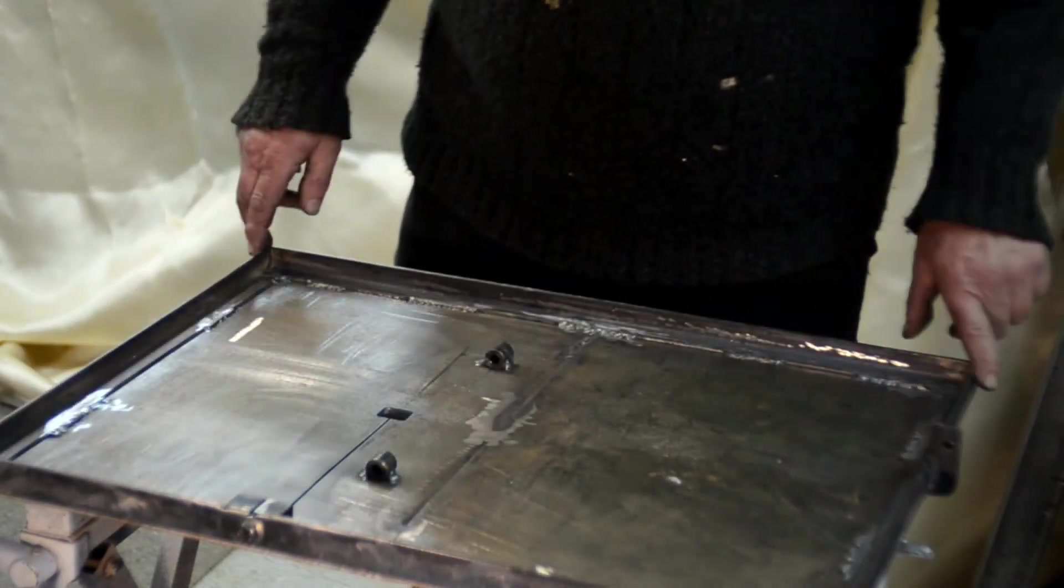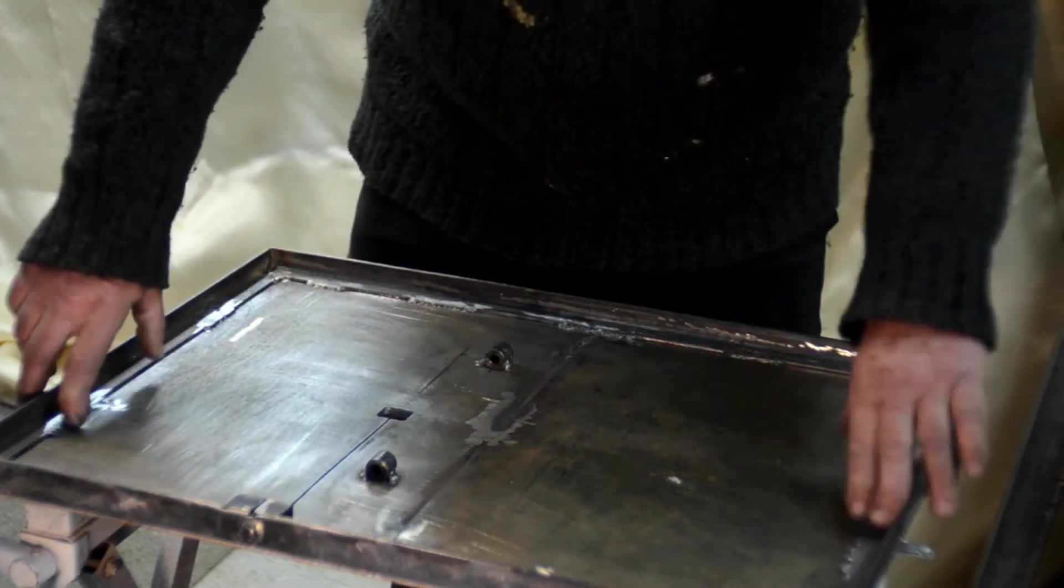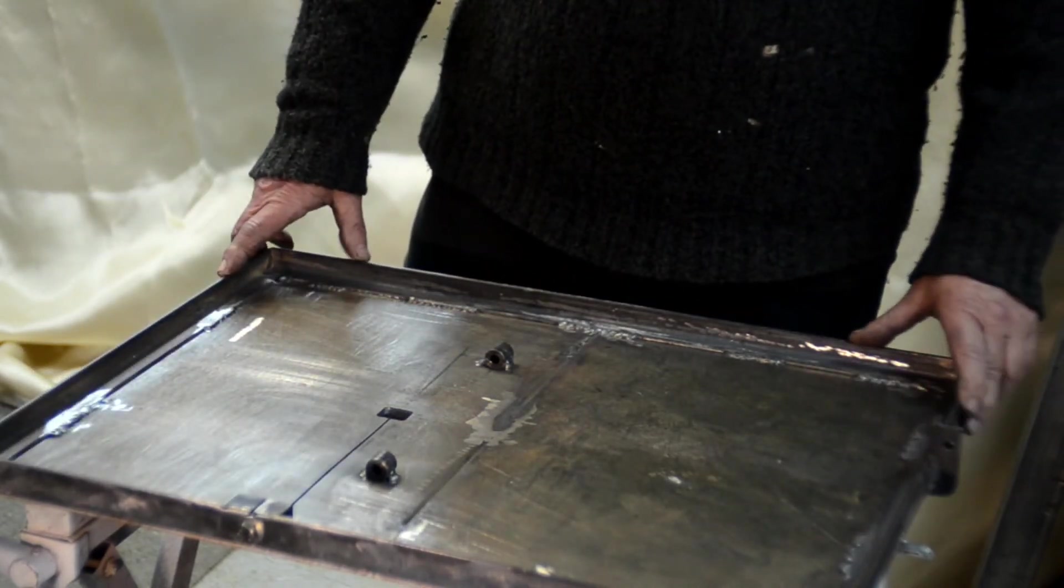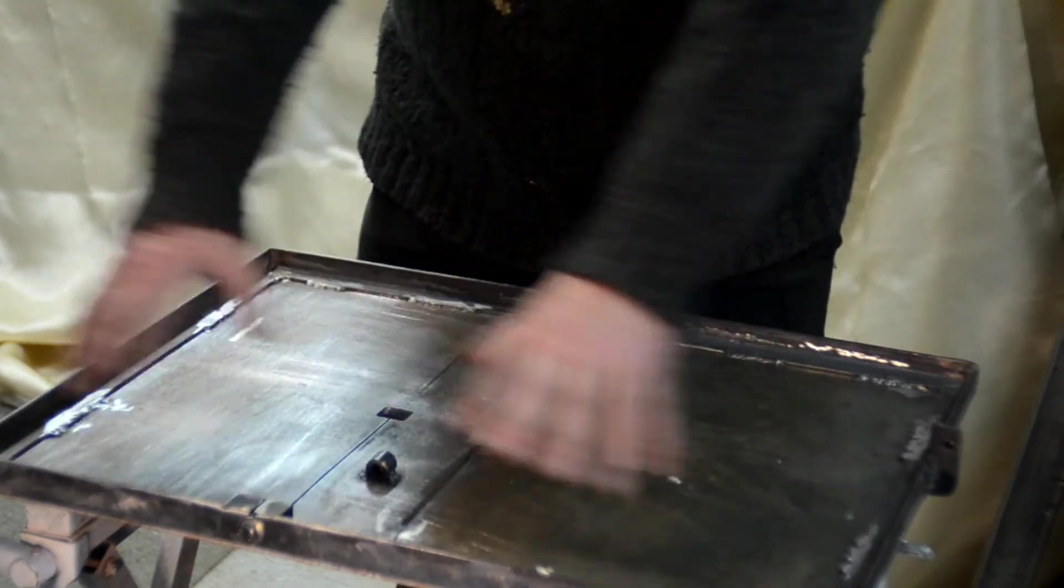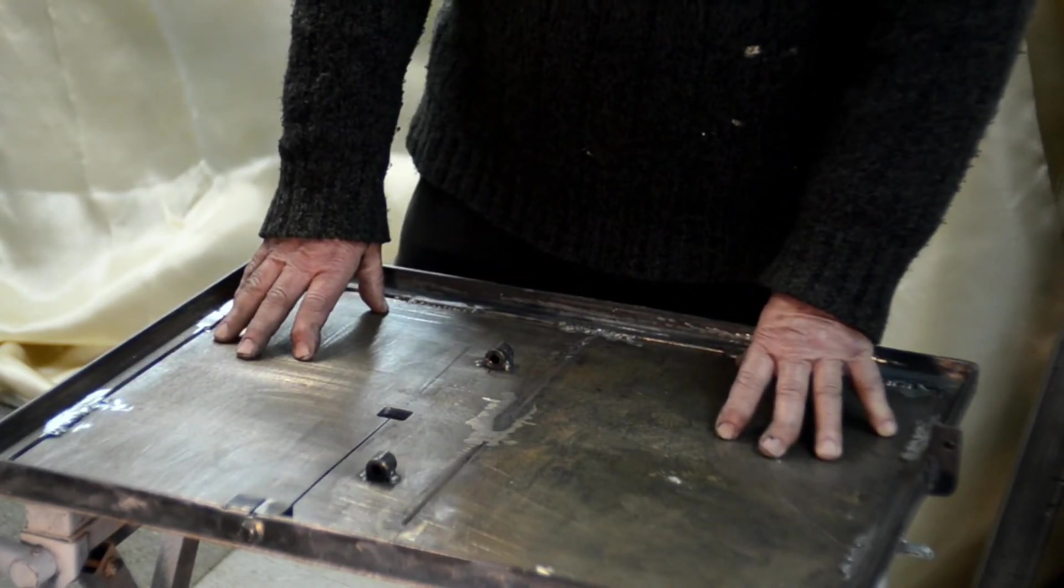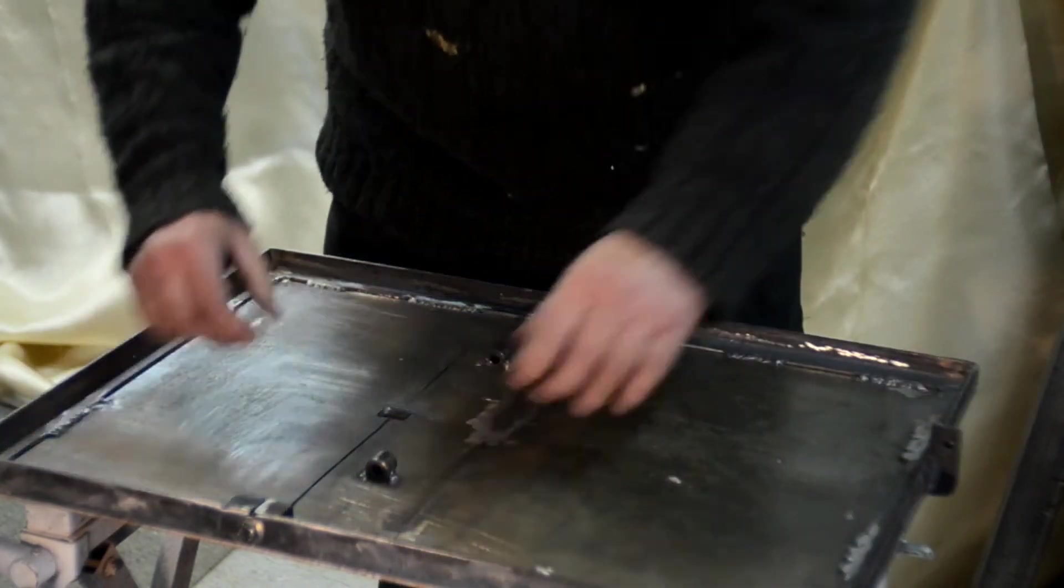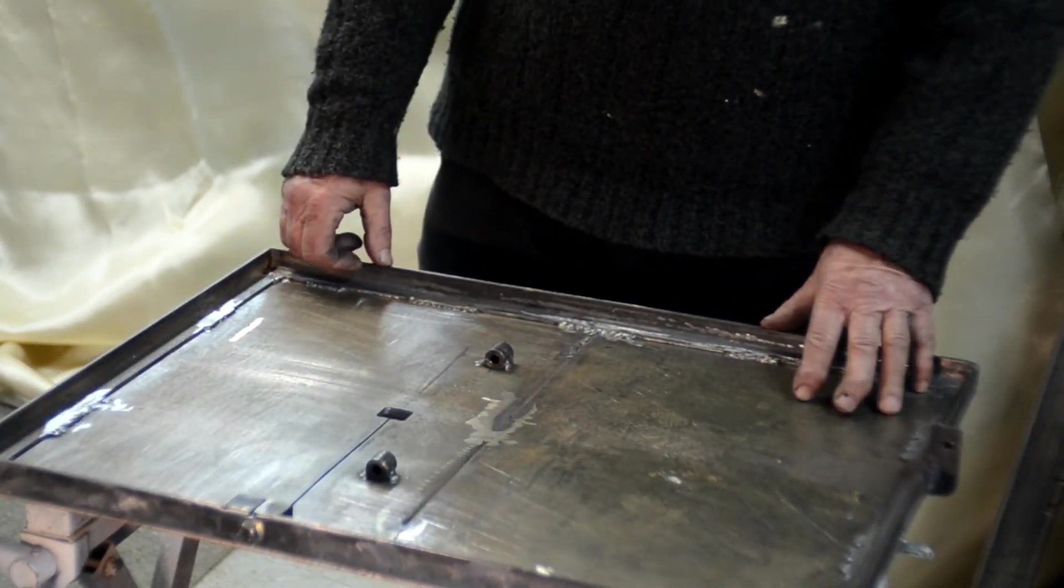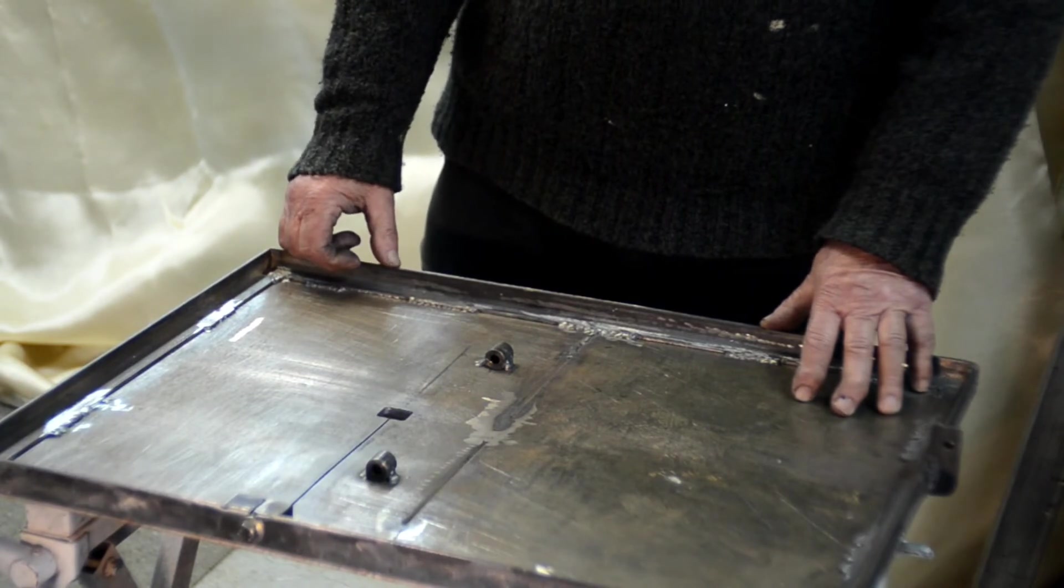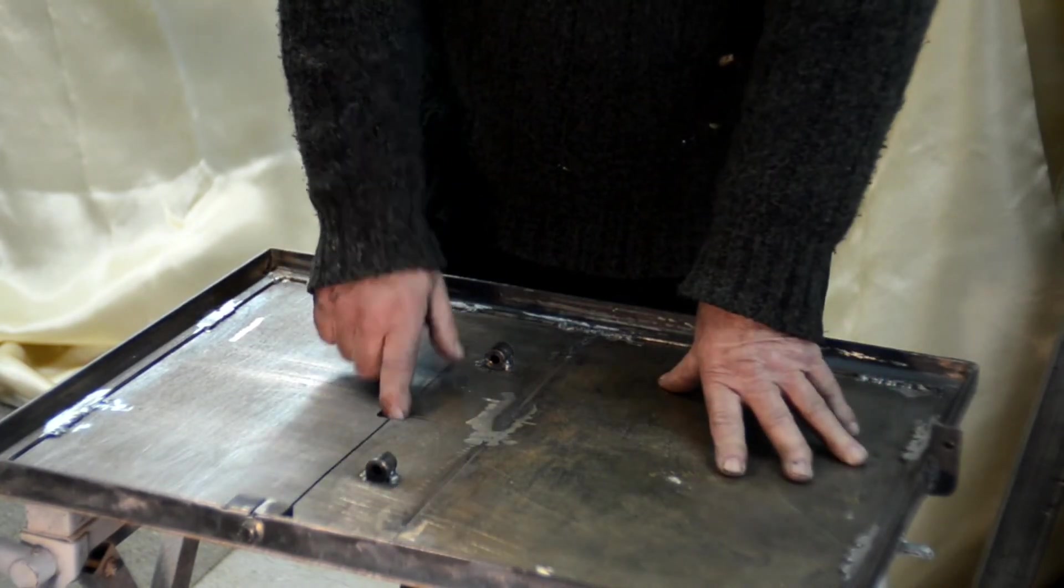You'll notice that there's angle iron that's been welded on around the edges. There are two reasons for this. One is to stiffen the table up somewhat. And the second reason is it gives me some edges to clamp some guides or fences on if I need that in the future.